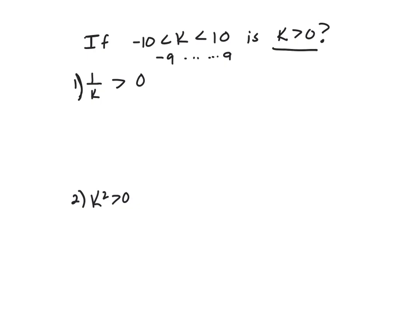Clue 1: 1 over k is greater than 0. That works. Because the only way 1 over k is greater than 0 means it's positive. And the only way 1 over k can be positive is if the numerator is positive and the denominator is positive. And 1 is definitely positive. So that means k has to be positive. So 1 works.